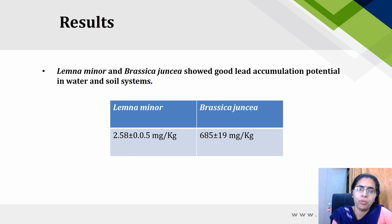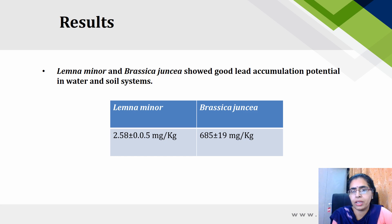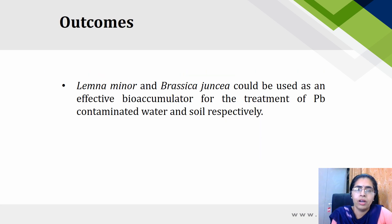Lemna minor showed 2.58 mg per kg of lead accumulation, while Brassica juncea showed 685 mg per kg of lead, as it had been treated with 800 mg per litre of lead concentration. The outcome of the study was that Lemna minor and Brassica juncea are both effective bioaccumulators, especially for lead treatment from contaminated soil and water environments.